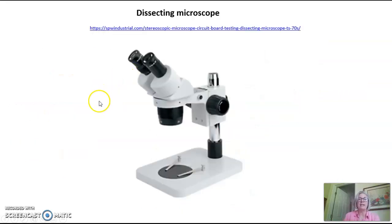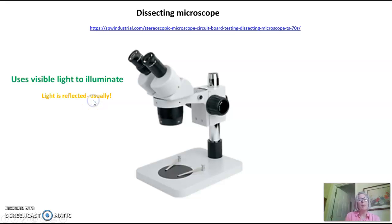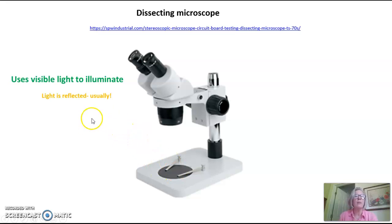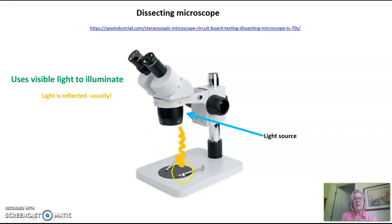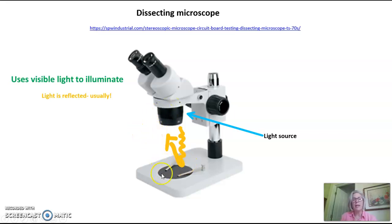Next, we have the dissecting microscope. This uses visible light to illuminate, but it uses reflective light usually. Some dissecting scopes can use transmitted light, but most use reflected light. The light source is up above, and the light comes down to your specimen and bounces off, coming back up into the microscope. So it's reflected — we call this reflected light.